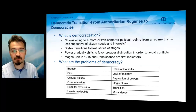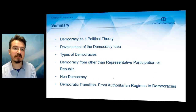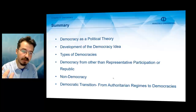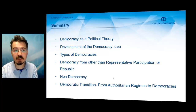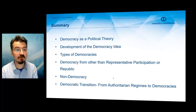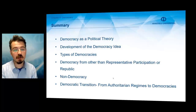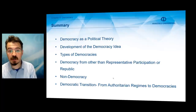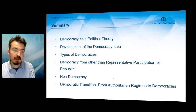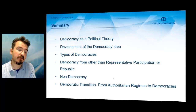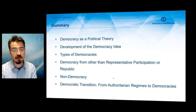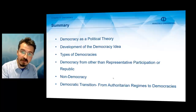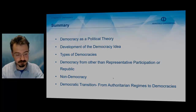In summary, what we have seen in this chapter: we started with an introduction, then focused on democracy as a political theory, discussed the development of the democracy idea, looked at types of democracies, considered democracy from other than representative participation or republic, saw different forms of non-democracy, and finally discussed the democratic transition from authoritarian regimes to democracies. Thank you very much.